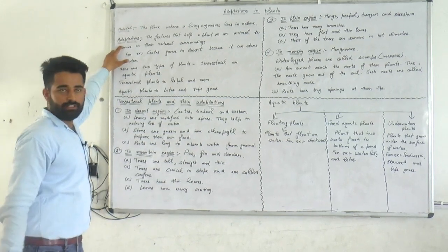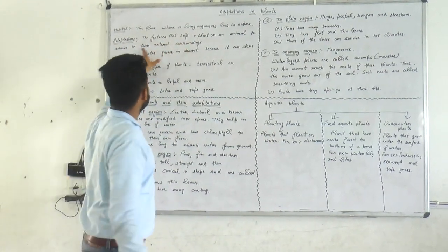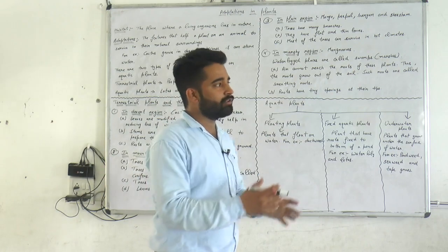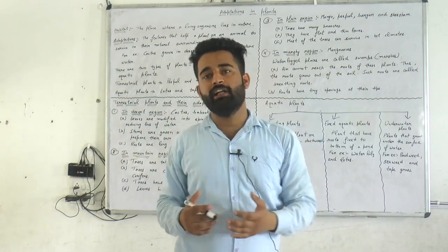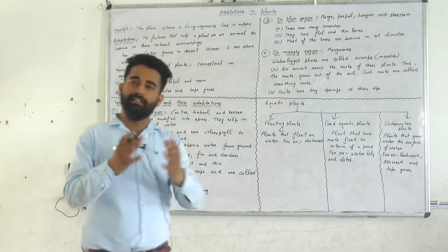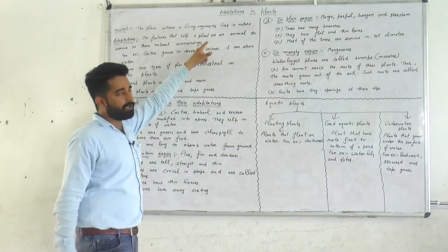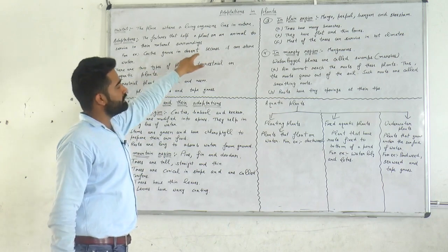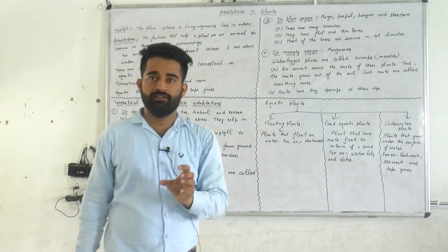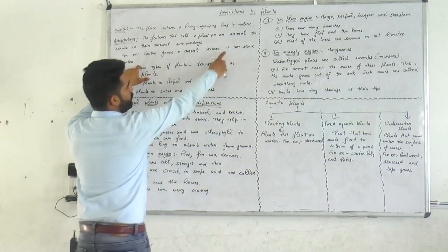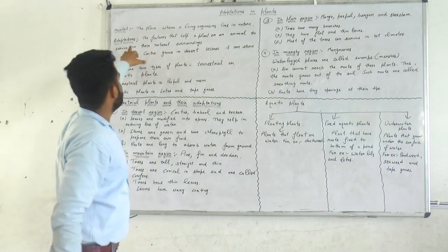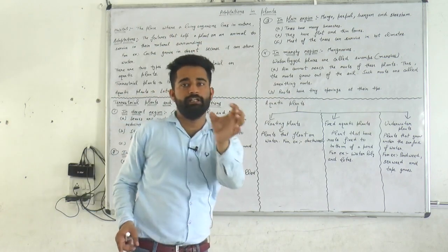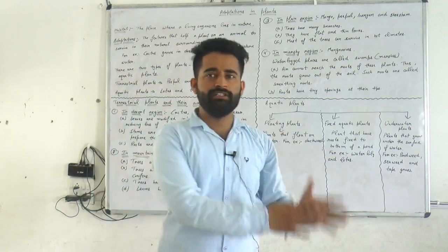The next term is adaptation. What is adaptation? The features that help a plant or animal to survive in their natural surroundings are called adaptations. For example, cactus grows in the desert because it has a special feature — it can store water. That special feature is called adaptation. These are features that help an organism to live and adjust in a particular area.